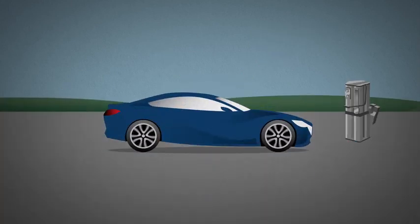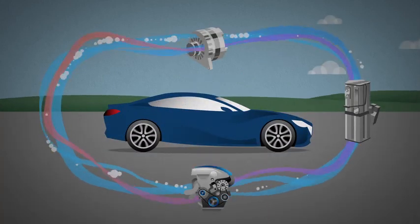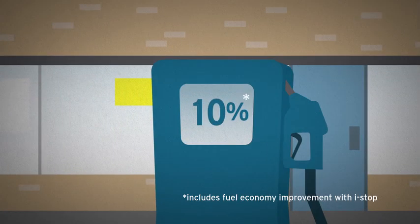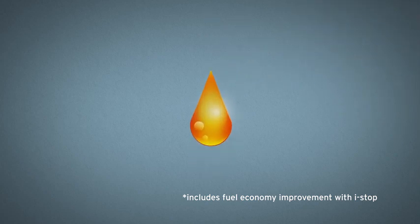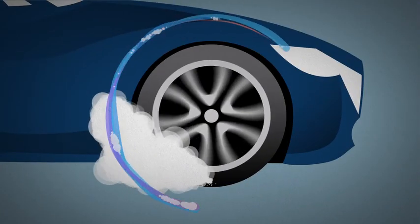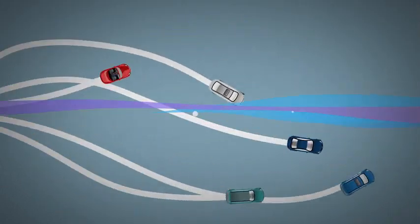With all its components in place, i-ELOOP closes the broken energy loop. Not only does it improve your fuel economy by as much as 10%, but it also enables 100% of the engine's horsepower to go directly to where it counts. In effect, wasted energy is turned into driving enjoyment.